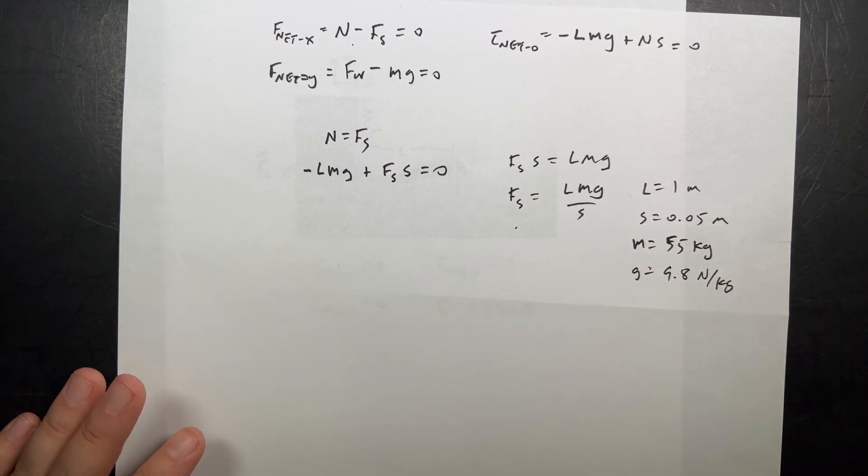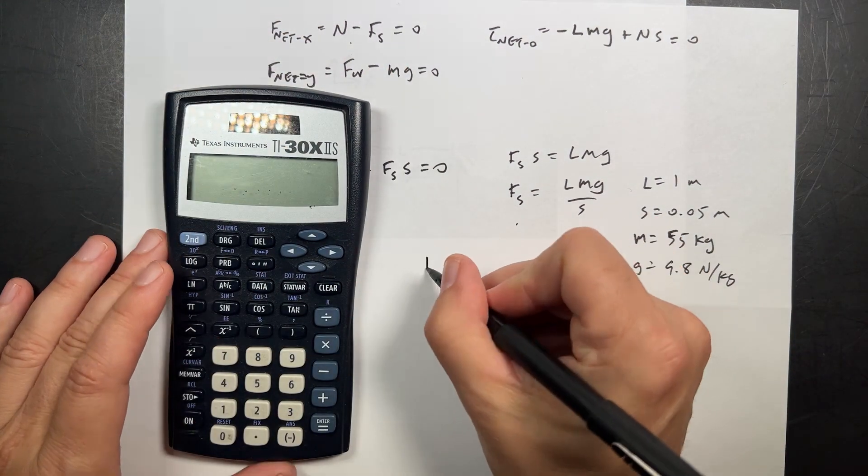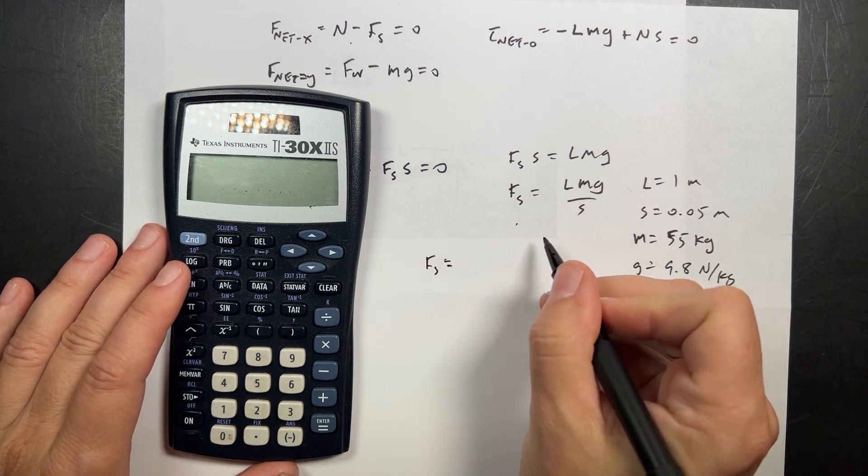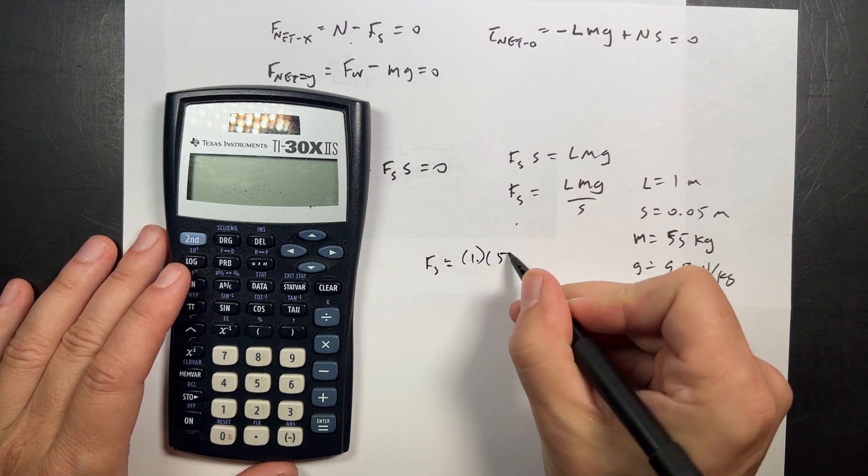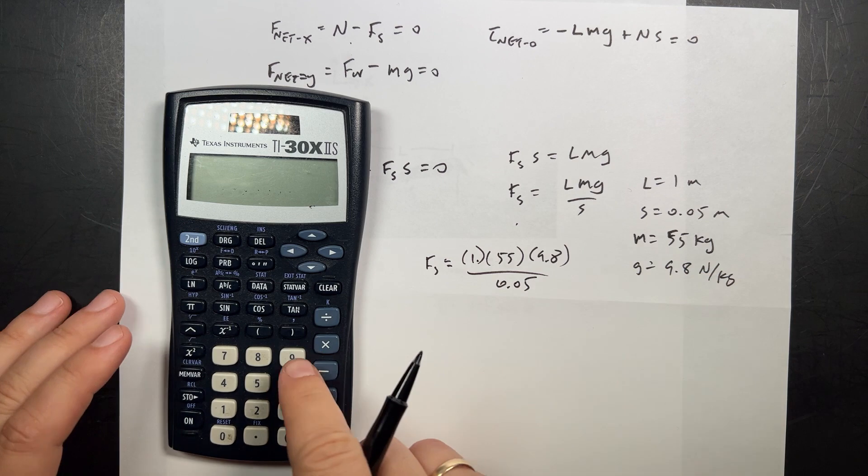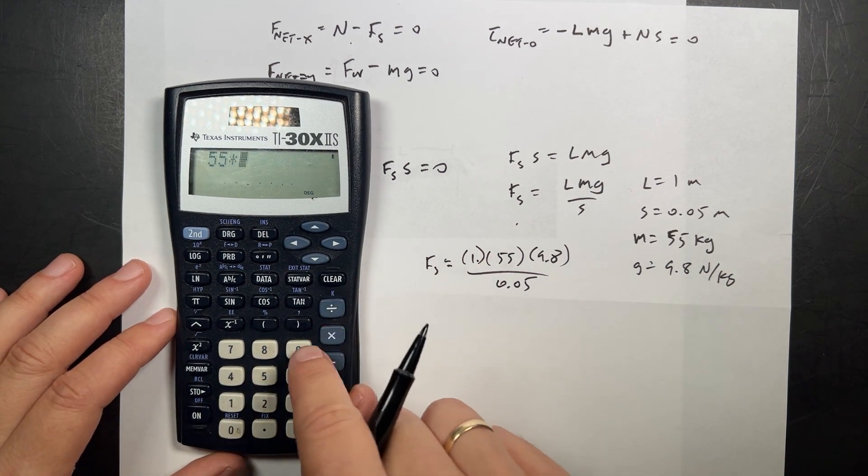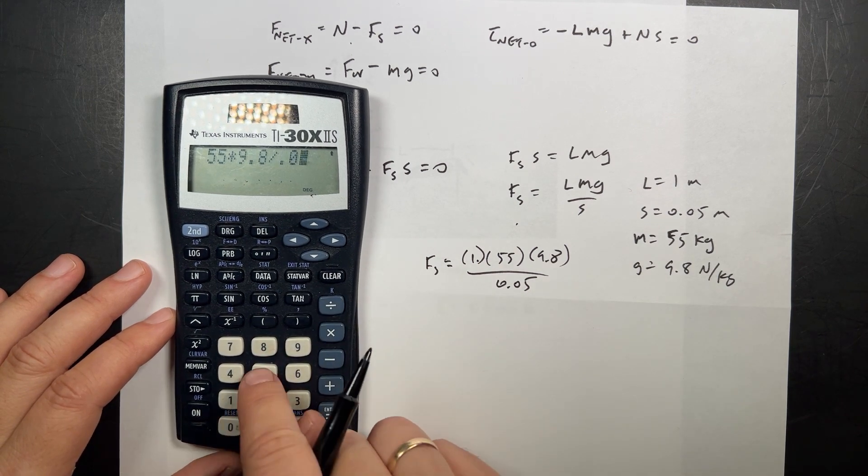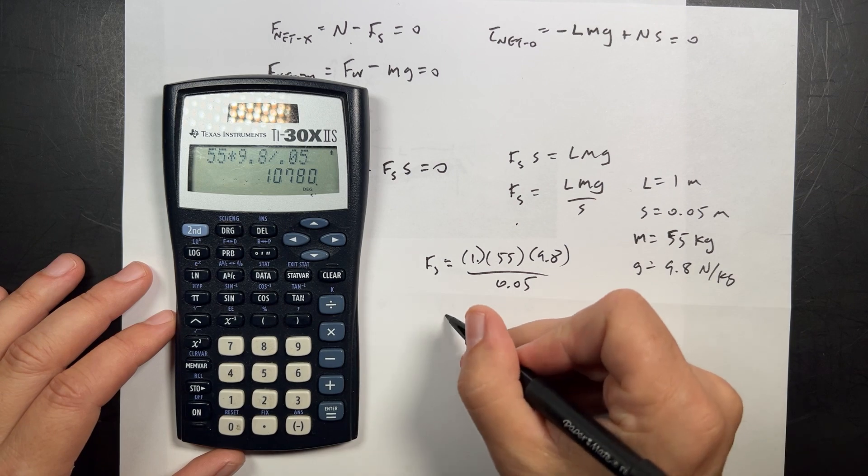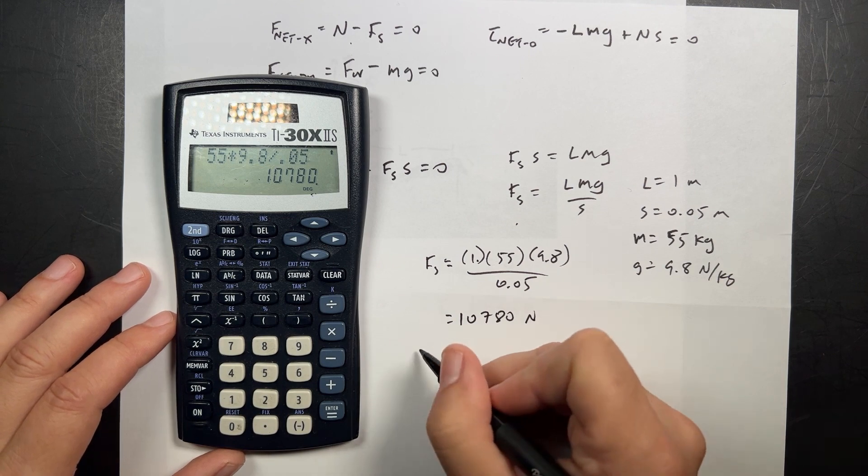So all I have to do is put that in. Where's my calculator? Here it is. So spider force equals L, one meter, times M, 55, times g, 9.8, divided by 0.05. So 55 times 9.8 divided by 0.05 equals 10,780 newtons.